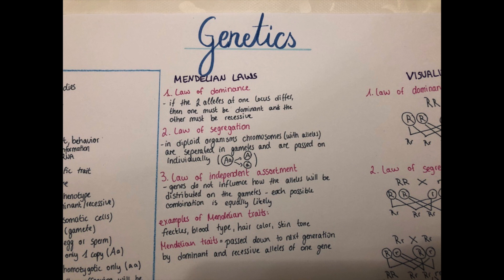Okay, so the third law. The third law is the law of independent assortment. And this means that the genes do not influence how the alleles will be distributed on the gametes. So every possible combination that you can imagine is equally likely to happen.